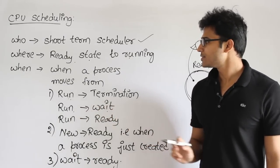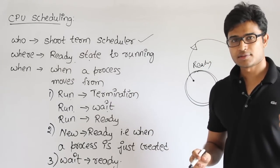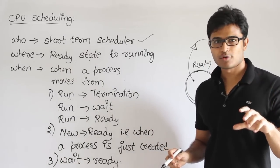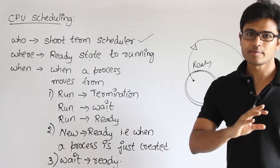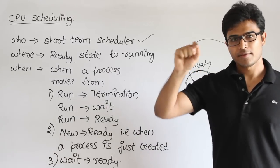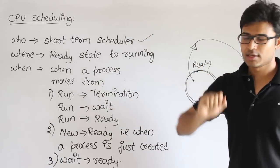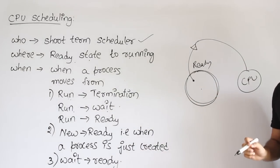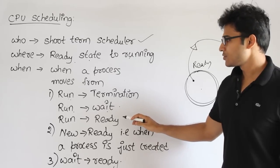The second case is running state to wait state. When a process is running, it might need IO or some other resource that is not currently available, so it goes to the wait or blocked state. At that point you can pick another process from the ready queue and schedule it.